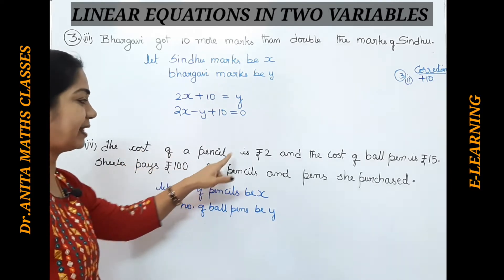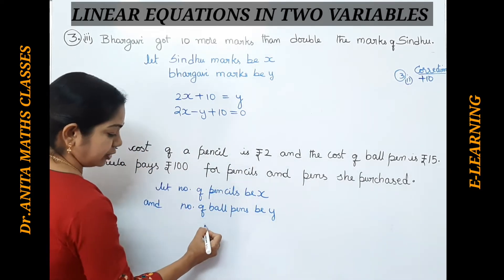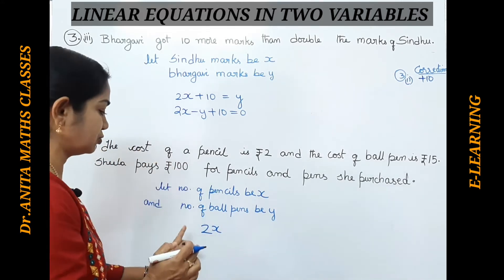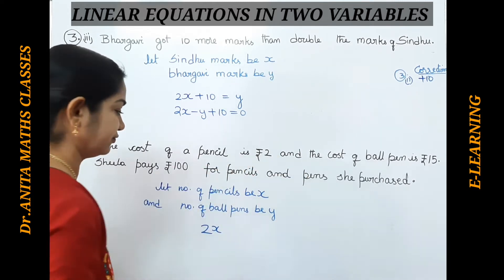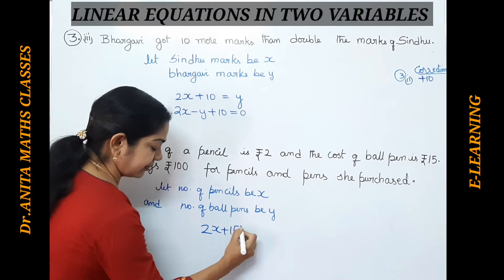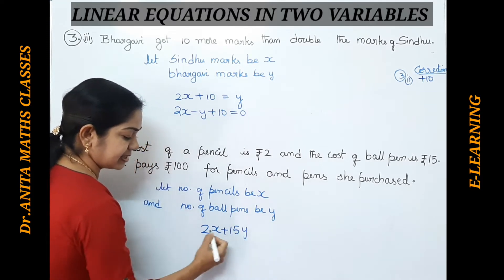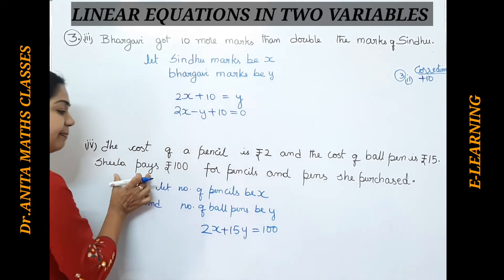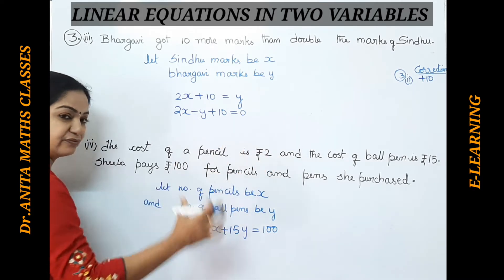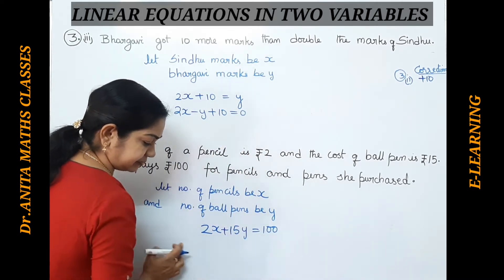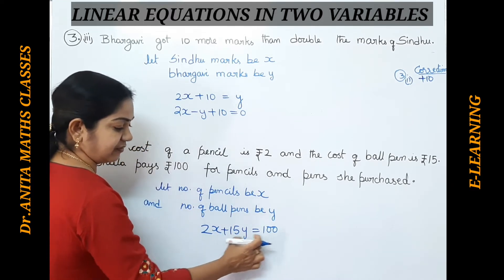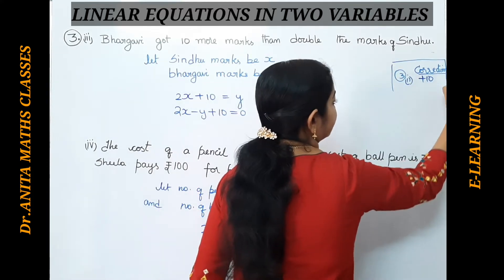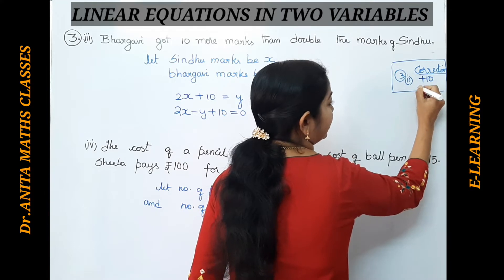The cost of one pencil is Rs. 2, so X pencils cost 2X. The cost of one ballpoint pen is Rs. 15, so Y pens cost 15Y. These together must equal 100 because Sheila pays Rs. 100 for pencils and pens. So the final answer is 2X + 15Y = 100.